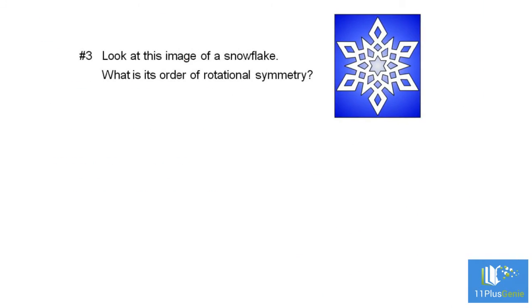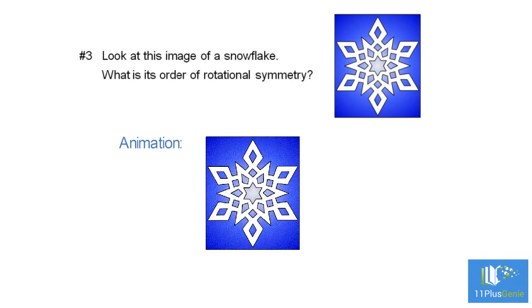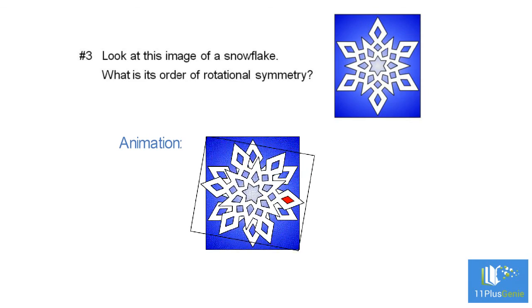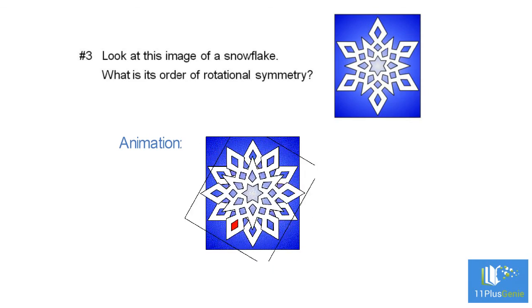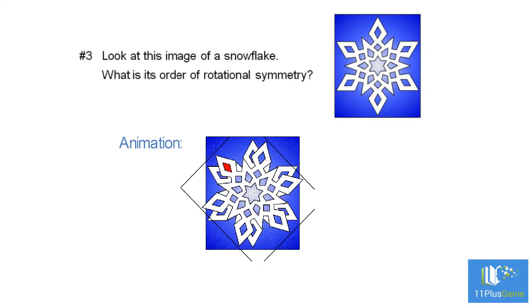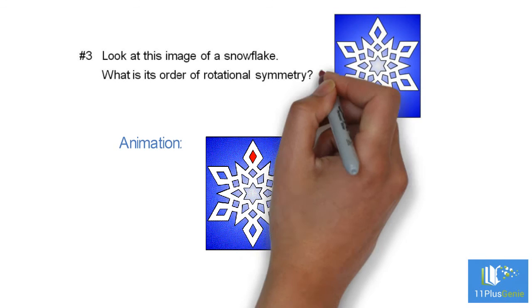Number three. Look at this image of a snowflake. If we turn this image through 360 degrees it falls six times on itself. The order of rotational symmetry is 6.